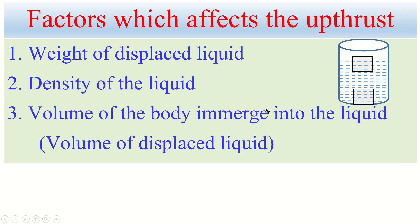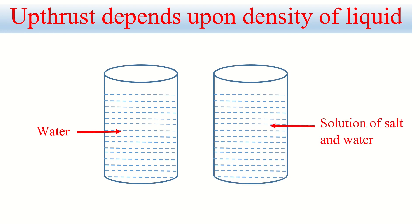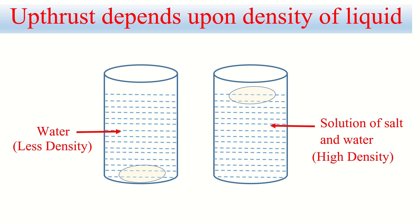Let's talk about the density of the liquid and how upthrust depends on it. Say we have water and another liquid — a concentrated solution of salt and water. If an egg is placed in water, it sinks. But if the same egg is placed in the salt solution, it floats. The reason is clear: water has less density, so it exerts less upthrust. The salt solution has higher density, so it exerts more upthrust, causing the egg to float.